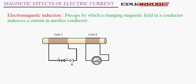Let us understand this process with the help of a figure. There are two coils — coil 1 and coil 2. Coil 1 is connected to a battery and coil 2 is connected to a galvanometer, which is an instrument used to detect current in a circuit. When coil 1 is connected to the battery, the current suddenly changes from 0 to a nonzero quantity, causing a change in magnetic field. This changing magnetic field induces a current in coil 2, and the galvanometer shows a deflection. As soon as the current becomes constant, the deflection returns to zero. This is the principle used in electric generators to generate the electricity we use at home.